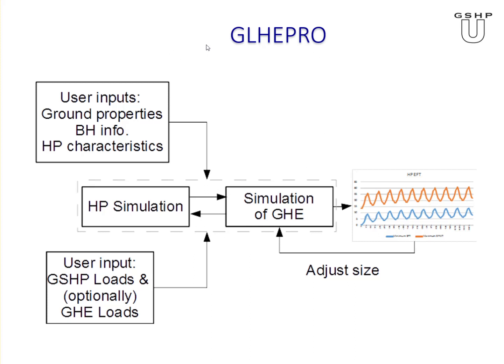To simulate the ground heat exchanger, we need to know the ground properties and the general design: how many boreholes, how they're laid out, what kind of grout, whether it's a single U-tube or double U-tube. When the user provides the loads on the ground source heat pump, the program automatically adjusts the size to meet user-specified peak temperatures — for example, entering fluid temperature no higher than 30°C (86°F) and no lower than 0°C (32°F). It simulates for a number of years, predicts maximum and minimum temperatures, and adjusts so we typically hit one limit or the other, but not both.